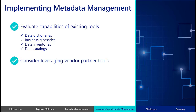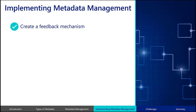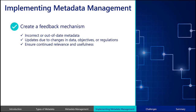Consider leveraging tools from vendor partners, which may offer automated metadata collection, management, and governance features to reduce manual efforts by operational and technical data stewards, and to increase accuracy. Create a feedback mechanism so that data users can inform the metadata management team of metadata that is incorrect or out of date. Regular reviews and reassessments will allow updates due to changes in data, agency objectives, or regulations. This practice will ensure the continued relevance and usefulness of metadata management tools and processes.